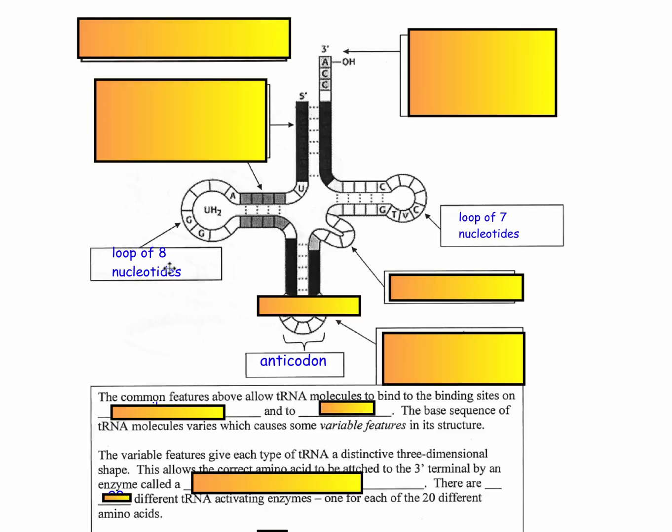So over here, loop of seven nucleotides. Over here, loop of eight nucleotides. You'll never guess what this little guy is called. Extra loop. Not exciting at all. Anticodon loop. This loop down here obviously contains the anticodon. And there's the anticodon, which would be three letters that are matching with the codon found on the mRNA molecule.